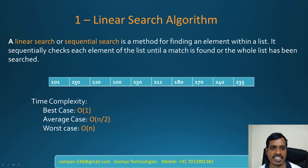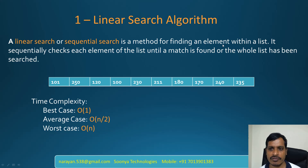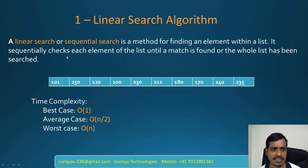Hi, this is Venkat Narayana from Junior Technologies. Today I am going to discuss the Linear Search Algorithm. A linear search or sequential search is the method for finding an element within a list. It sequentially checks each element of the list until a match is found or the whole list has been searched.